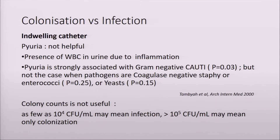In patients with an indwelling urinary catheter, pyuria is not a good indicator. When a patient has a long-standing indwelling catheter, the catheter itself may cause inflammation — white cells just signify an inflammatory process going on, not necessarily ongoing infection. Studies show that pyuria is only strongly associated with gram-negative UTI, but not for yeast-related UTI. Similarly, colony counts are useless.